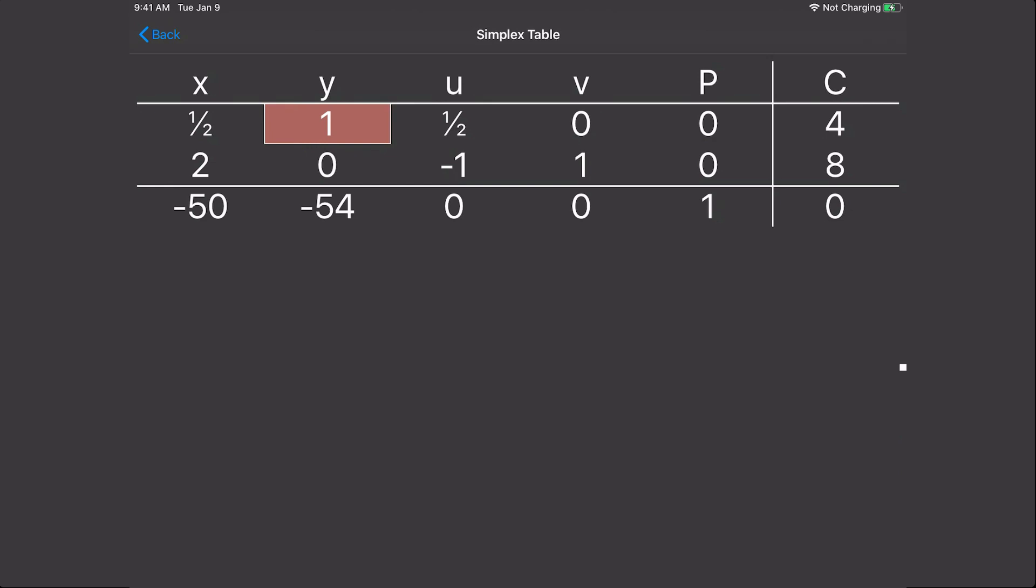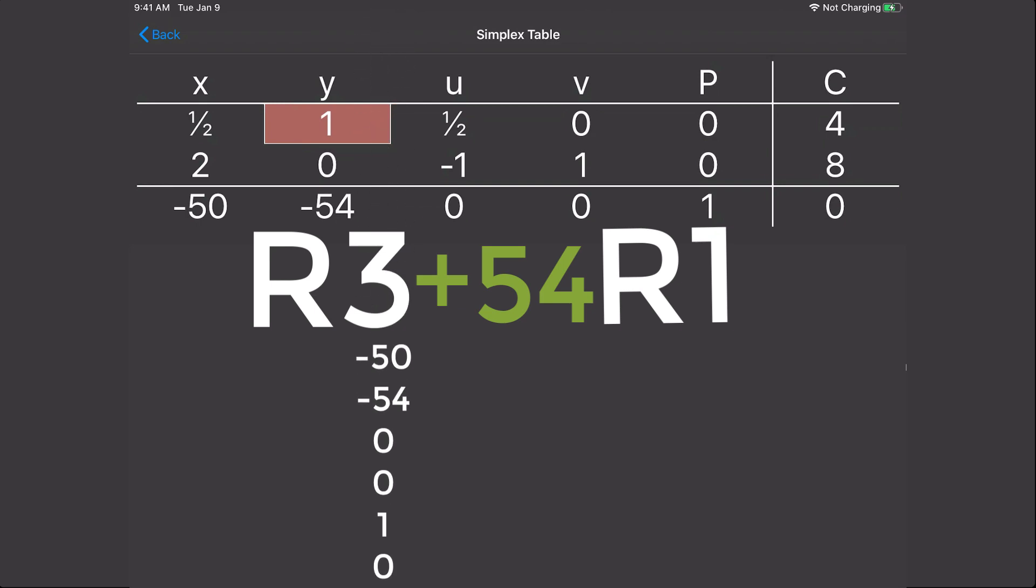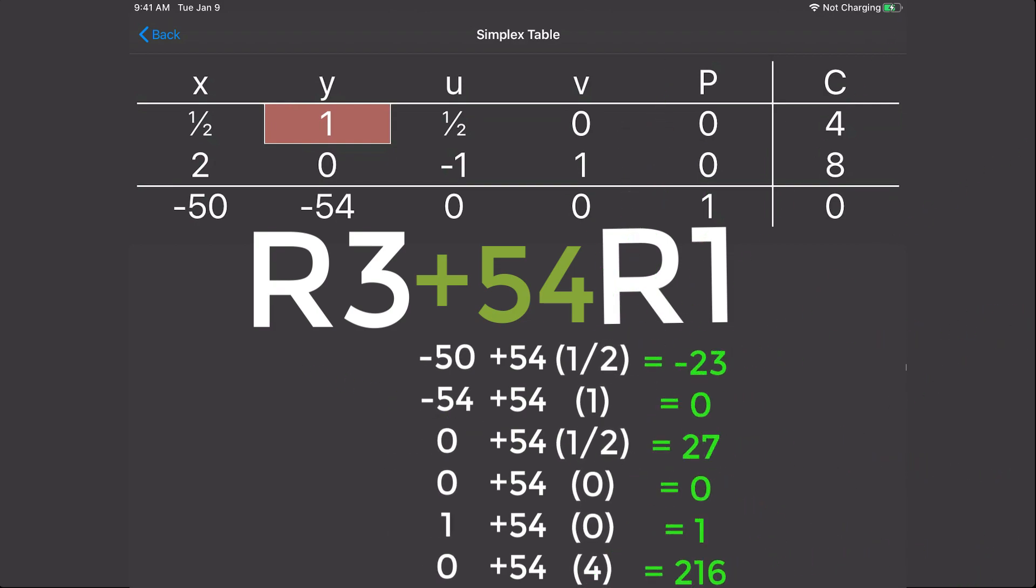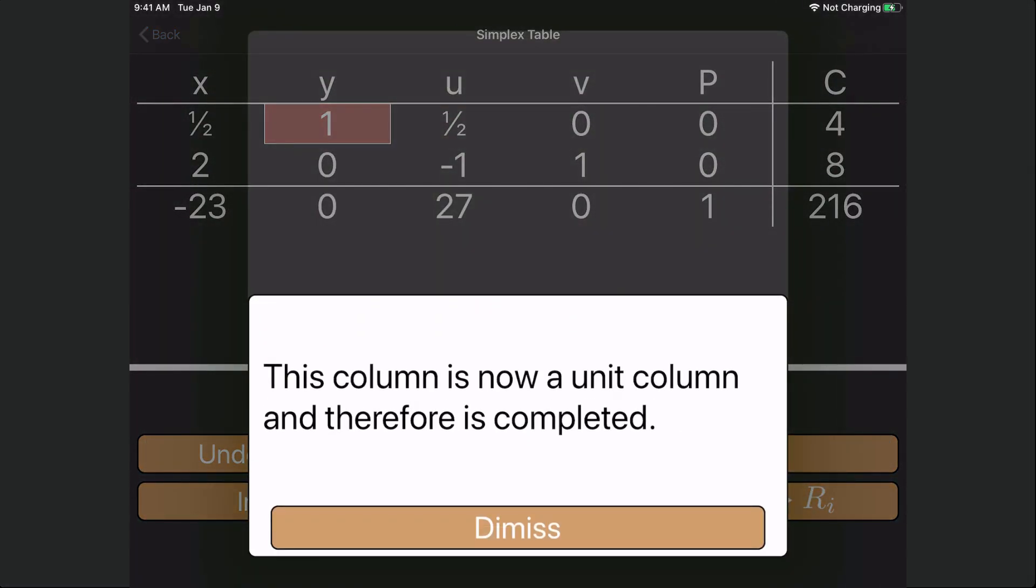Now we need to change row 3. So what row do we want to change? What is our pivot row? And what cancels the negative 54? Our row operation is going to be row 3 plus 54 times row 1. So write all the numbers below row 3 and all the numbers in row 1 below row 1. Don't forget to add the 54. And when you calculate, you're going to get negative 23, 0, 27, 0, 1, 216. Now let's go ahead and check it with the app. So row 3 plus 54 times row 1. Looks like everything matches up.